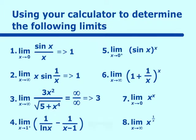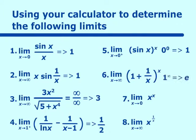The next one is infinity minus infinity, another indeterminate form, and your calculator should have given you one-half. The next one is zero to the zero — your calculator should have given one. Then one to the infinity, which should be very familiar; the answer is e. Another zero to the zero gives an answer of one, and finally infinity to the zero also gives an answer of one on your calculator.